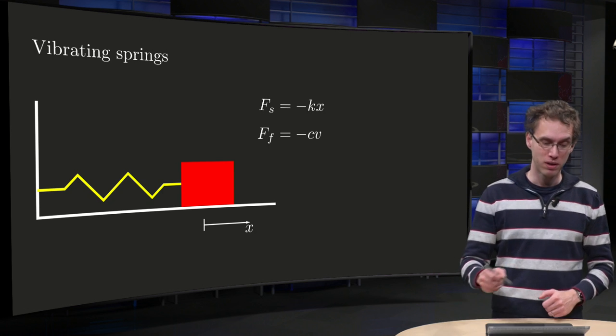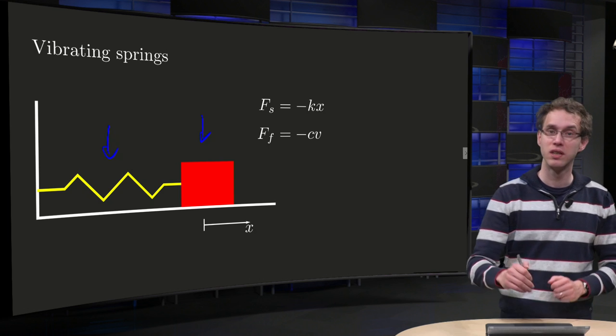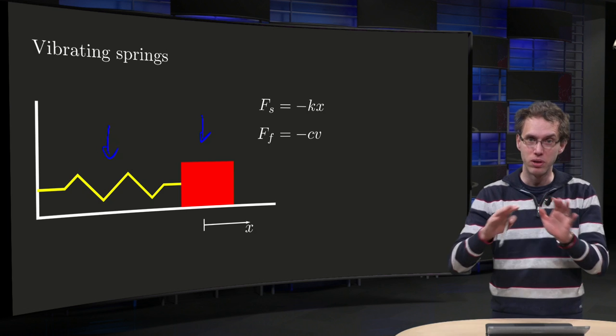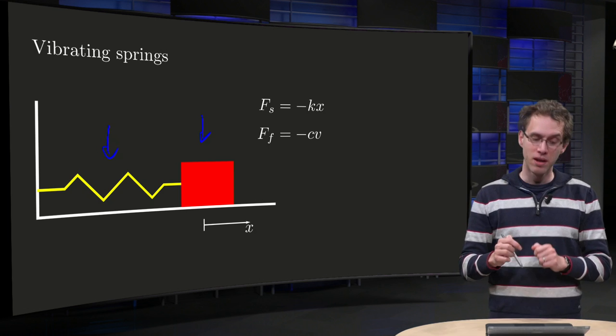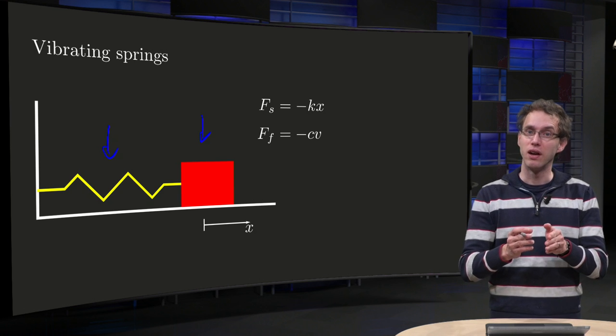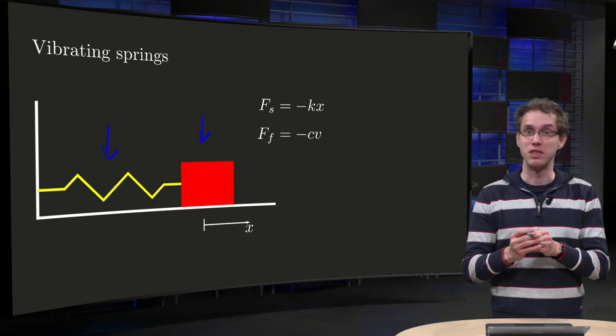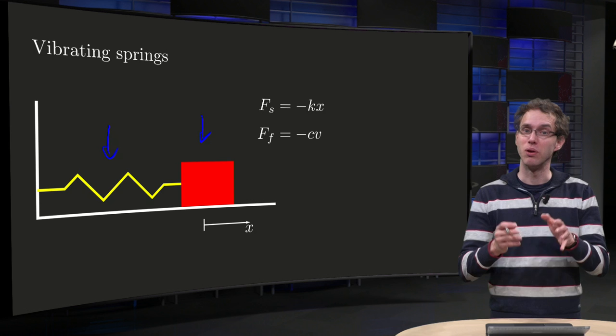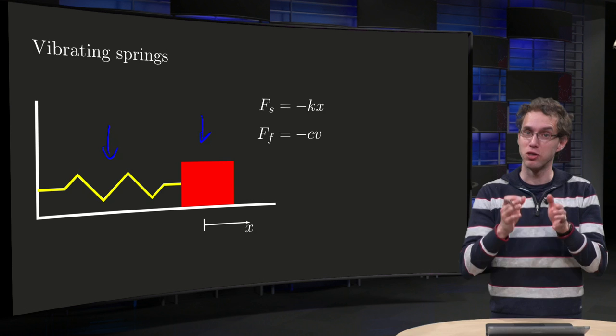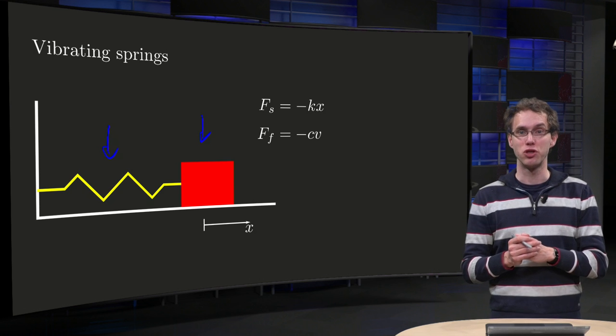We have our spring over here in yellow and some mass attached to it, and we let the mass move in the plane, so no gravity here. We denote the position of the spring as x, the position with respect to its equilibrium position, so x equals zero means the spring is in equilibrium, the mass just lies on the table. And then we see what kind of forces do we have.